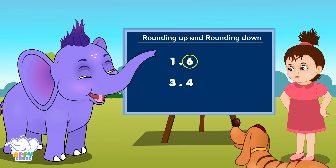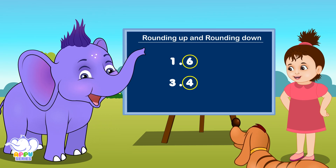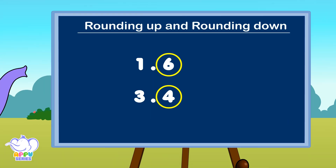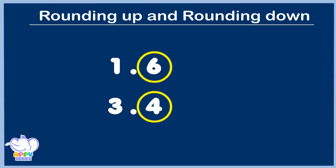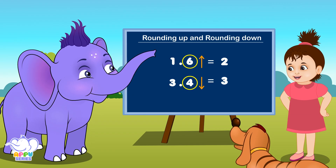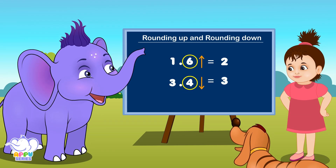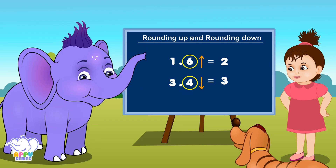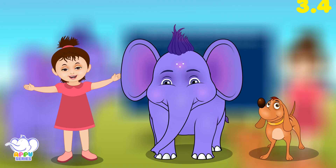Rounding up and rounding down, there is a rounder number to be found. Make it more or make it less, it's a rule that works the best.